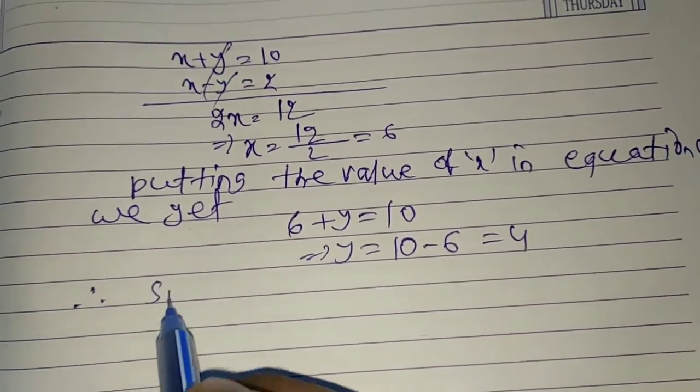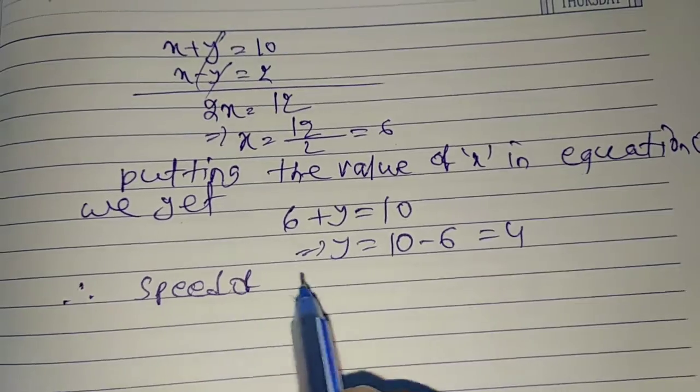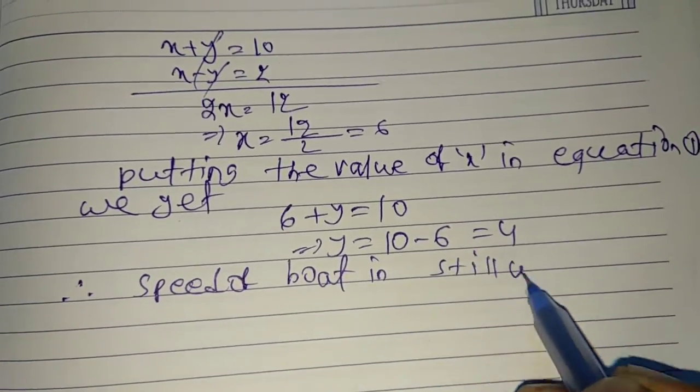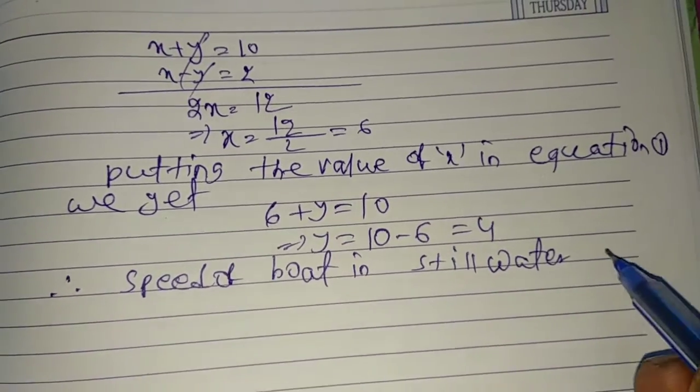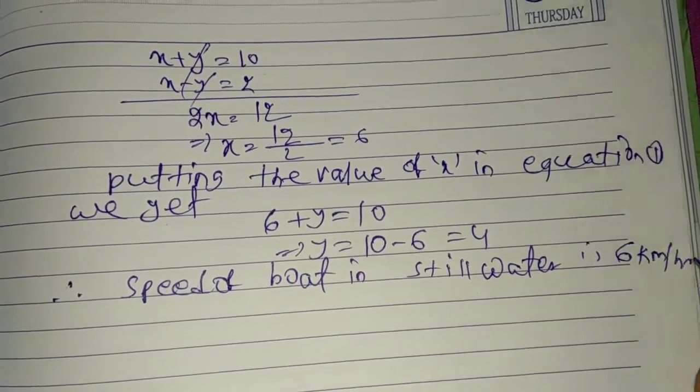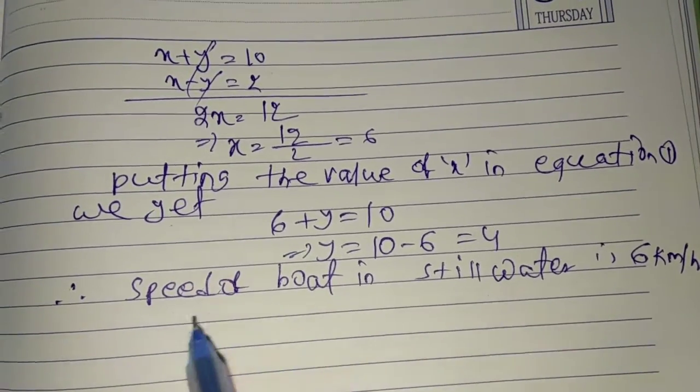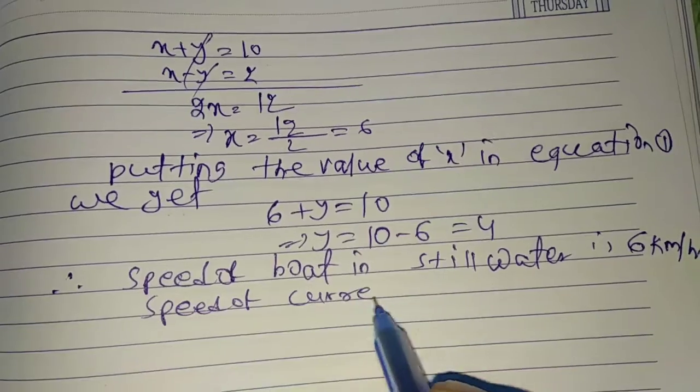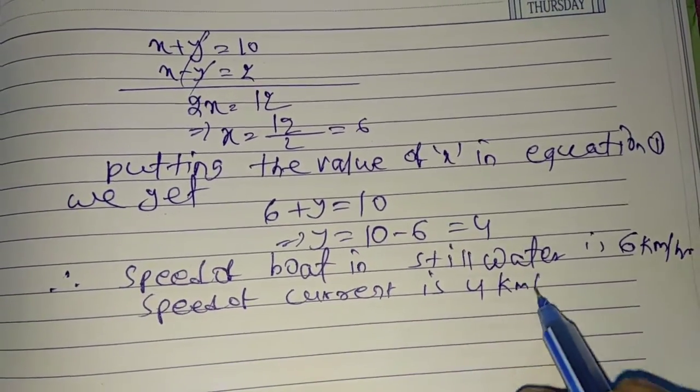We get the speed of boat in still water is x, that is 6 km per hour, and speed of current is 4 km per hour.